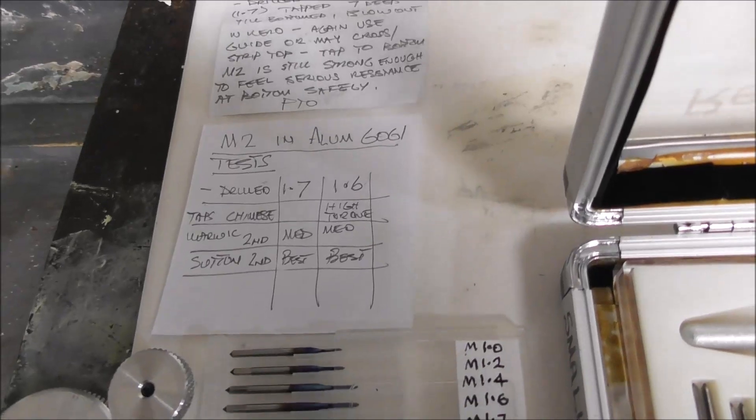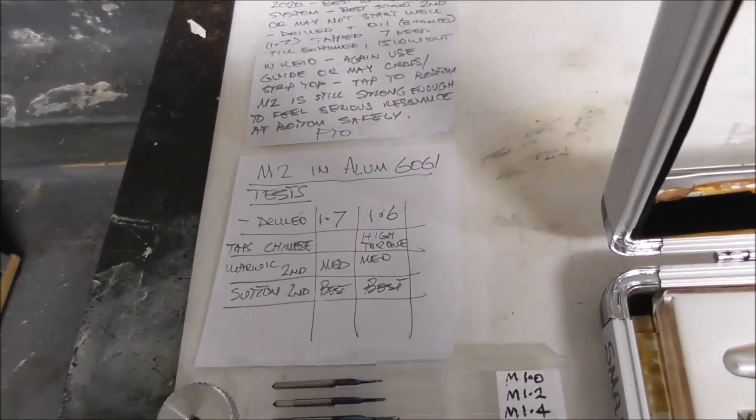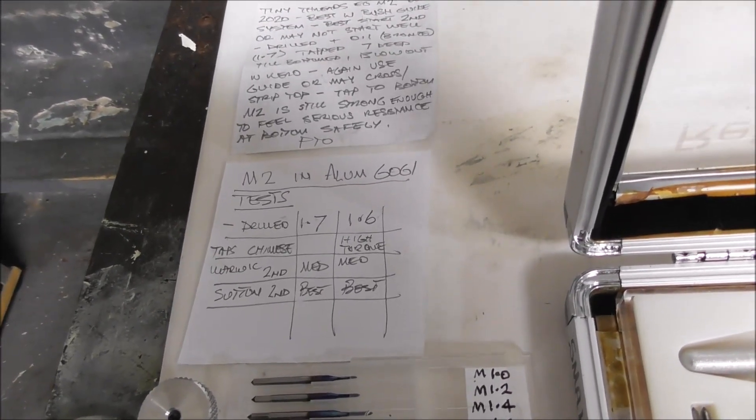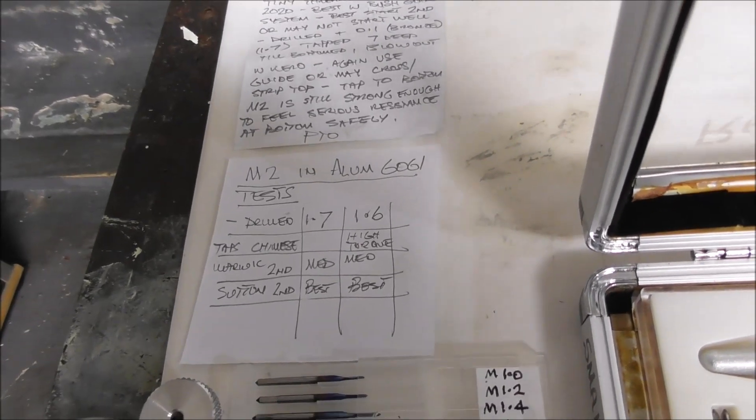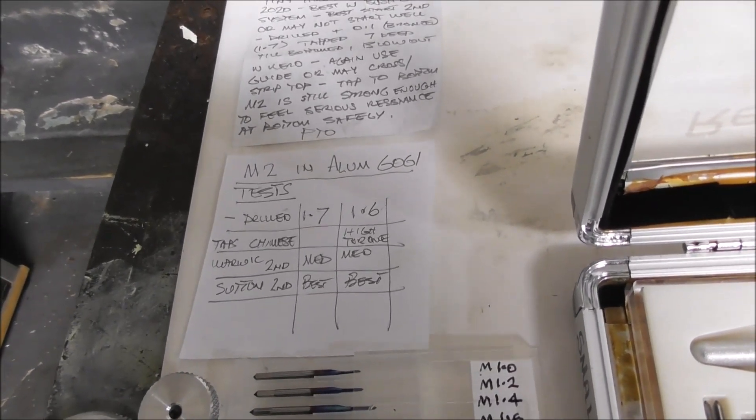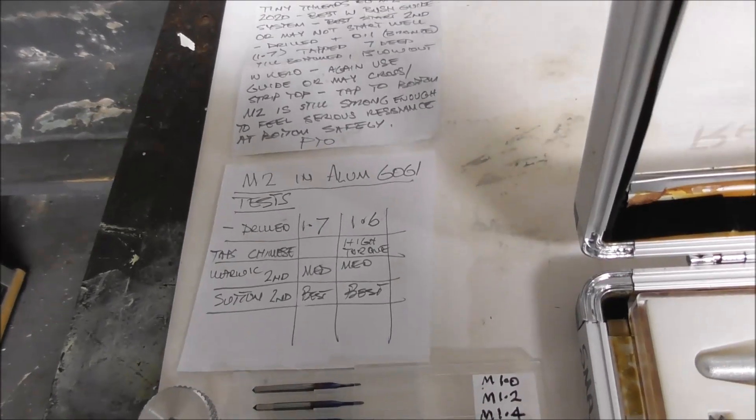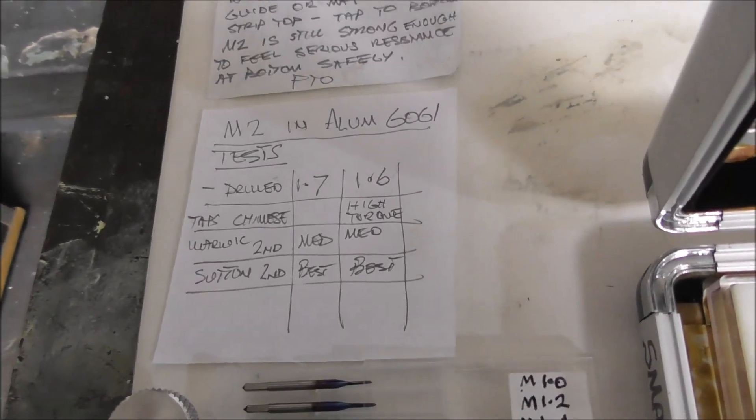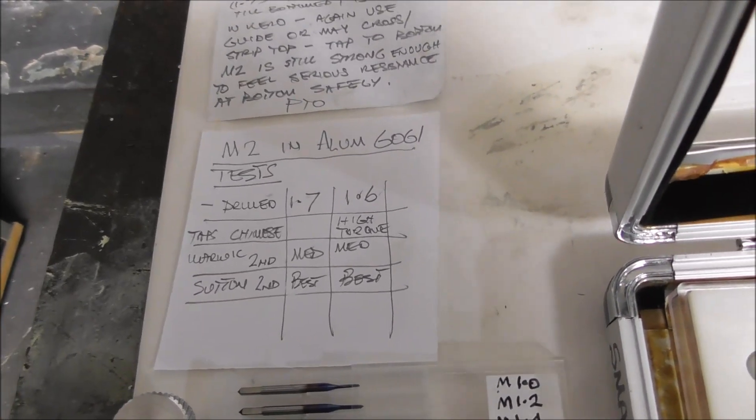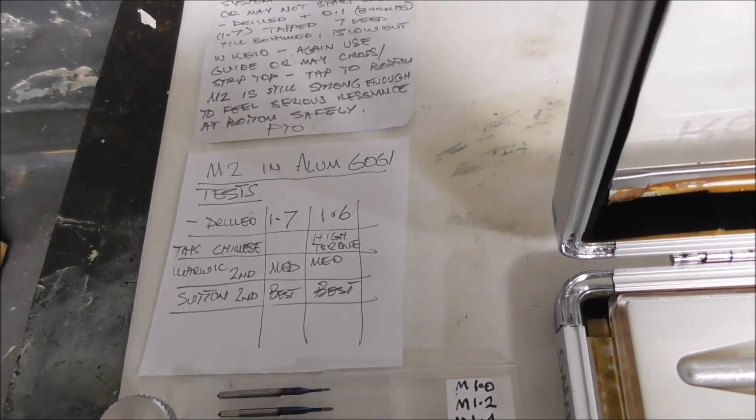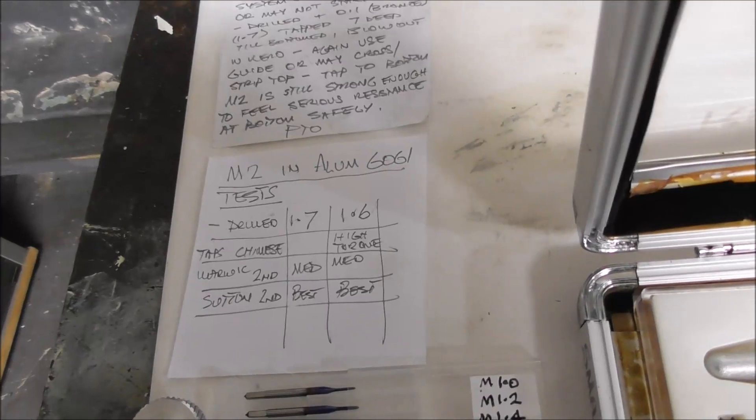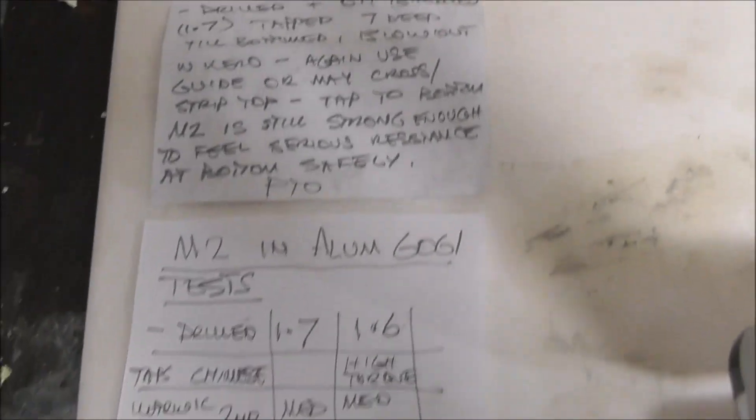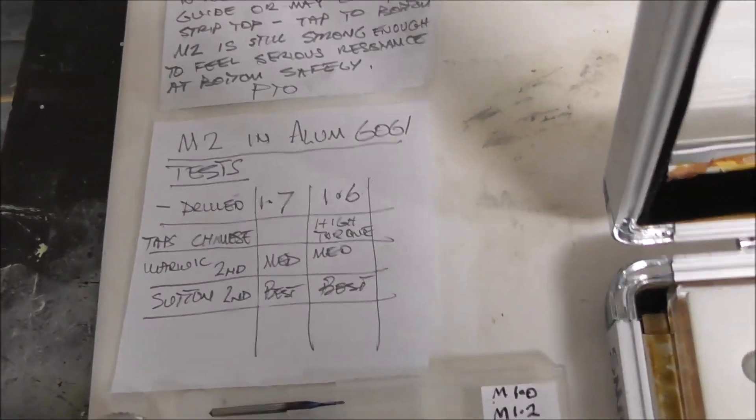For example, I did some tricky material and tested different types of taps. I tried Chinese taps that I bought from AliExpress; they look like quite good quality, but with a 1.6 pilot drill the torque was high and I felt it was on the point of breaking. I tried a Warwick tap, a second, and it was less torque but still medium. I tried a Sutton tap, a second intermediate tap, and that was the best. So you make these little notes so that in the future you know the grade, the type, the brand. So these little details, perhaps you can pause the screen and have a look at these details if you like. Might save you a disaster one day.